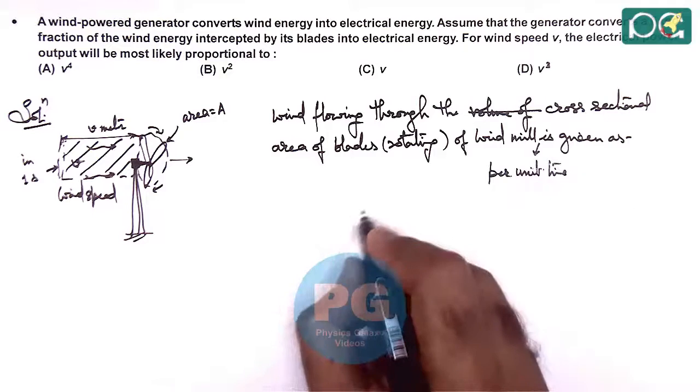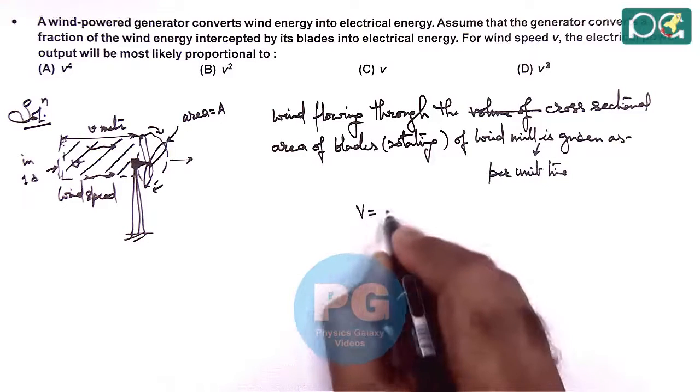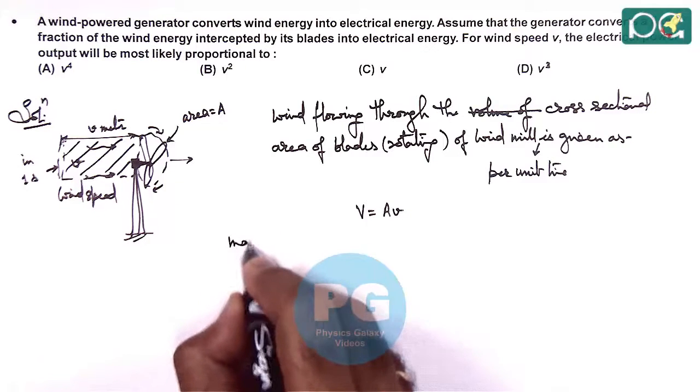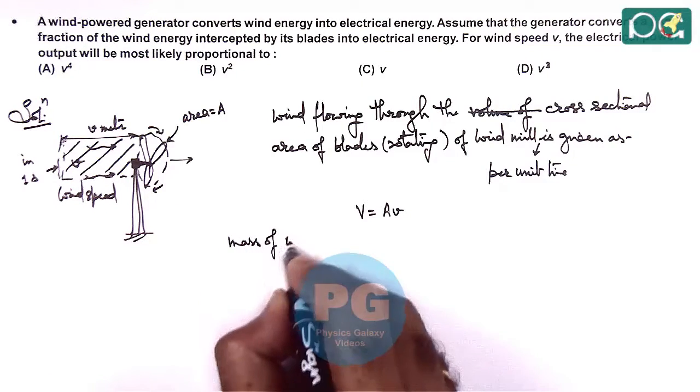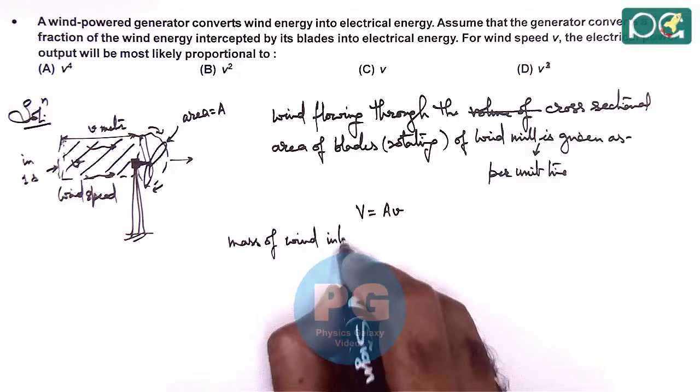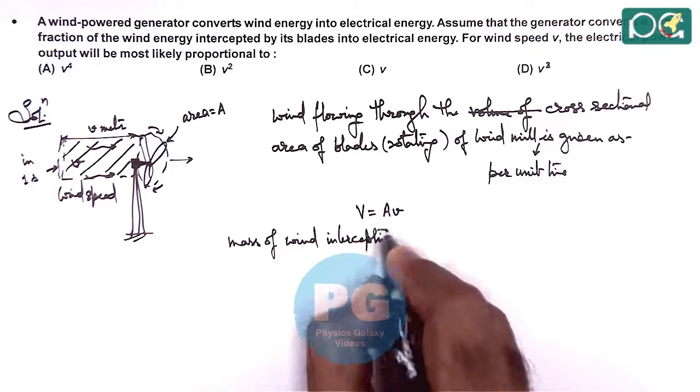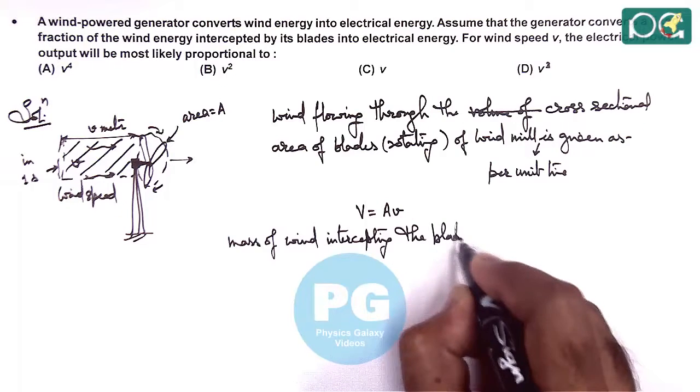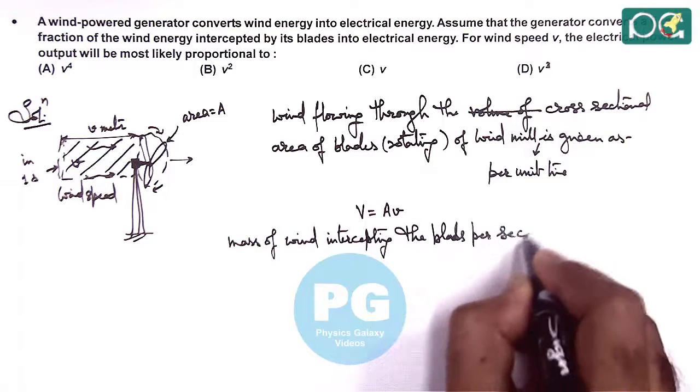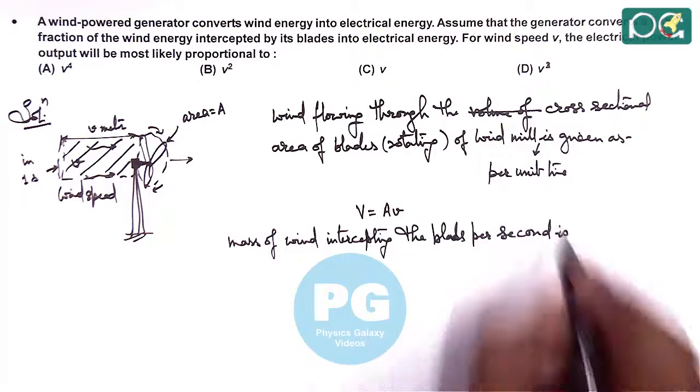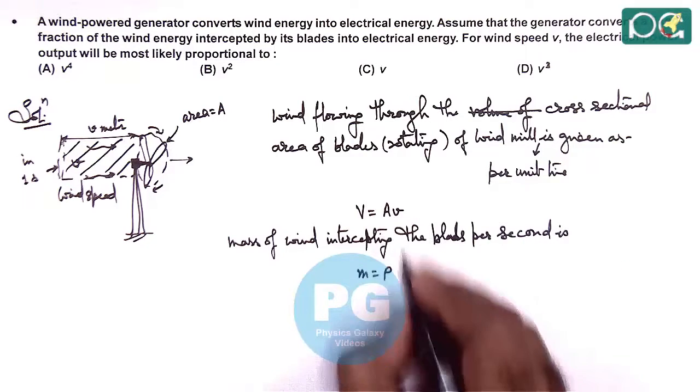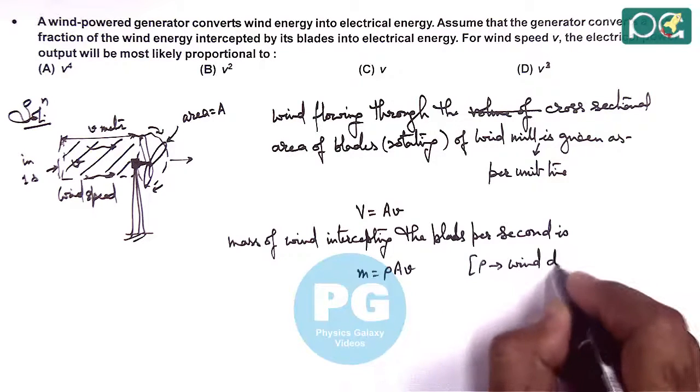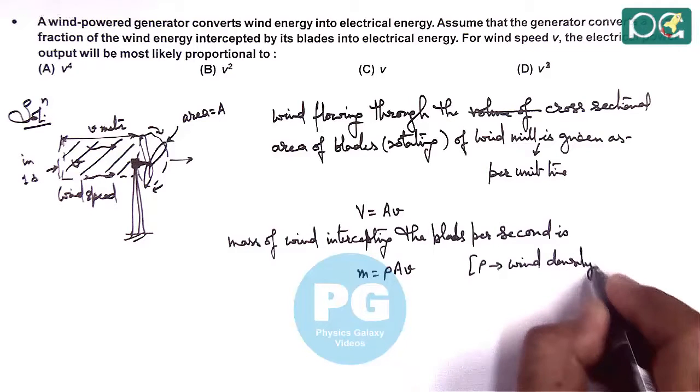So wind is given as the volume we can write as A times V, and if we talk about the mass of wind intercepting the blades per second, the mass we can write as ρAV, where ρ is the wind density of air.